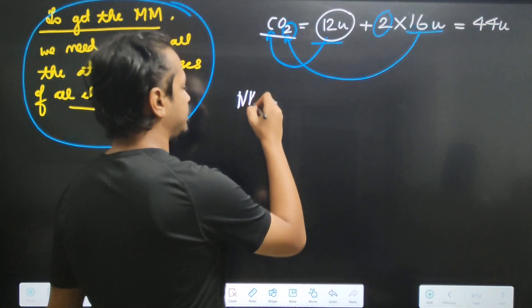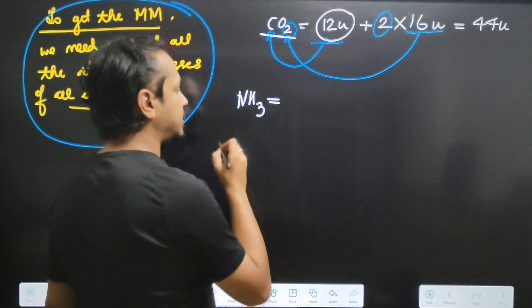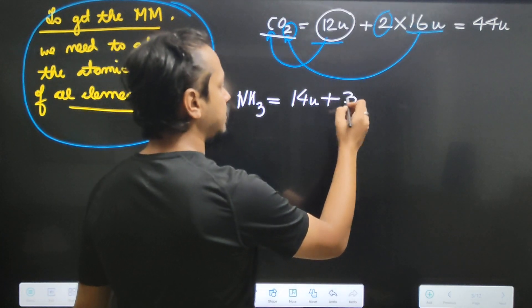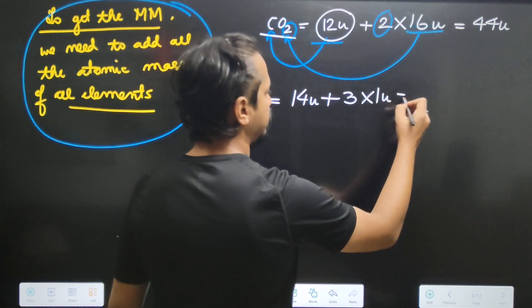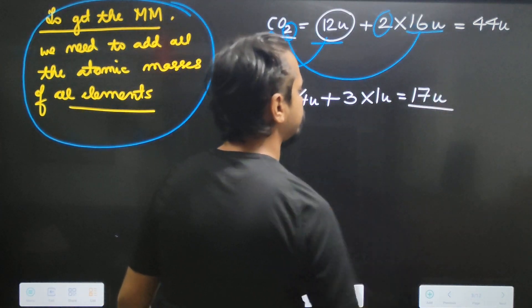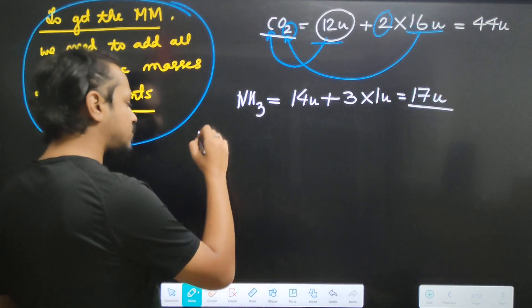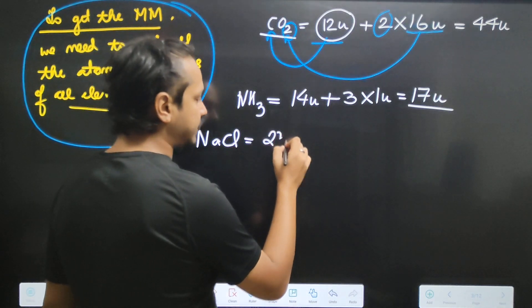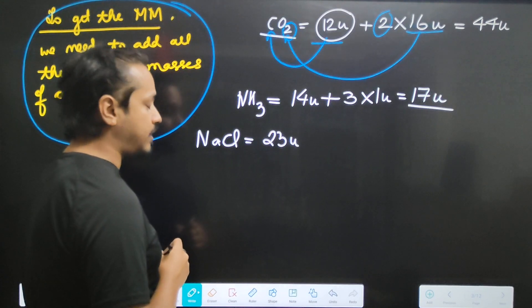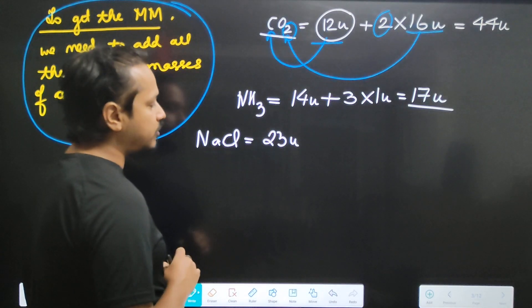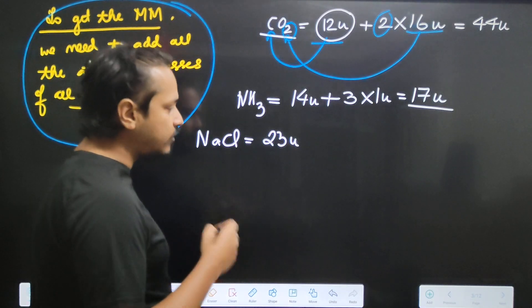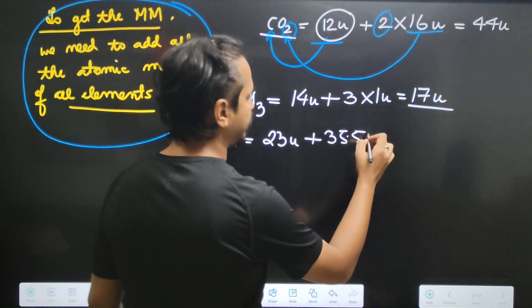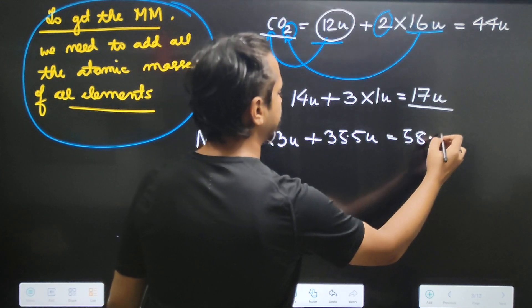Suppose I have to use ammonia — ammonia is nitrogen — so this is the molecular mass of ammonia. Suppose sodium chloride: Na has a mass of 23u, and chlorine is 35.5u. The value you get is 58.5u. So we calculate the molecular mass.